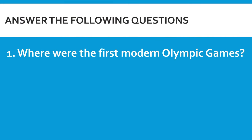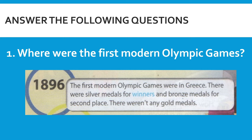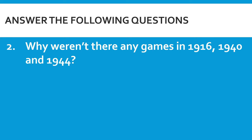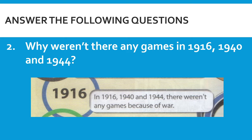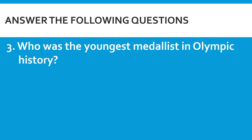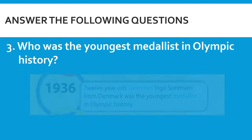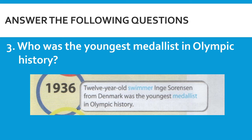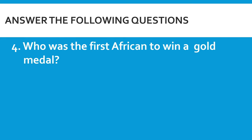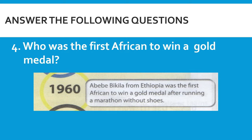Question one: Where were the first modern Olympic Games? Based on the text in 1896, the first modern Olympic Games were in Greece. Question two: Why weren't there any games in 1916, 1940, and 1944? There weren't any games because of war. Question three: Who was the youngest medalist in Olympic history? In 1936, swimmer Inger Sorensen from Denmark was only 12 years old, making him the youngest medalist in Olympic history. Question four: Who was the first African to win a gold medal? In 1960, Abibi Bikela from Ethiopia was the first African to win a gold medal after running a marathon without shoes.